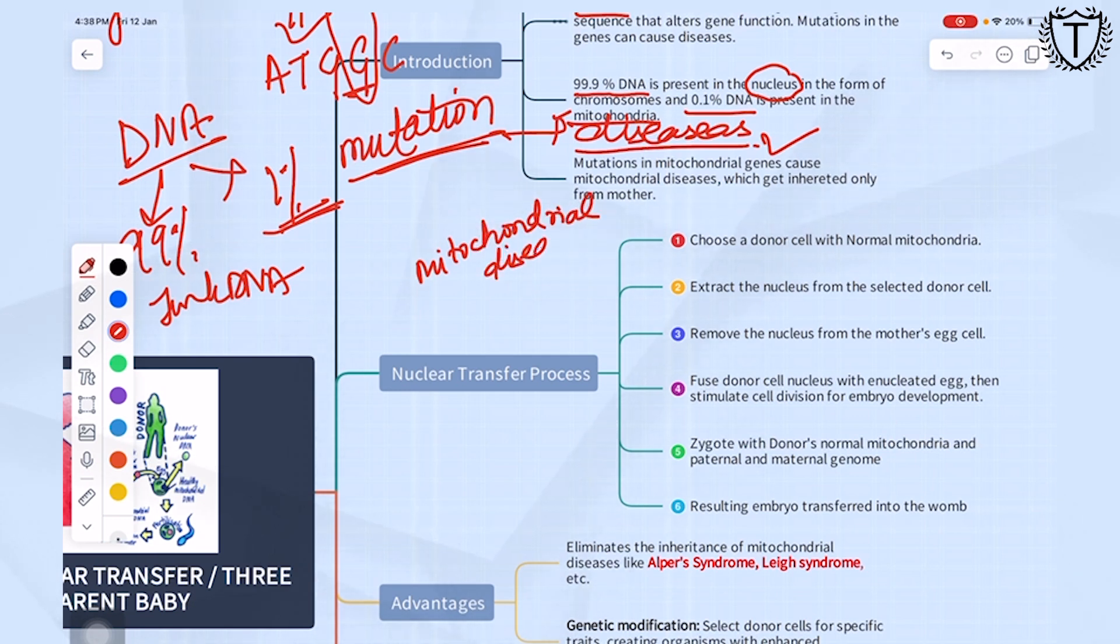One very interesting thing about these mitochondrial diseases is that these diseases can be inherited only from the mother, which means the father cannot be responsible for giving a child a mitochondrial disease. This exact thing was asked as one of the options in a question in 2021 prelims paper, which makes the topic very important.